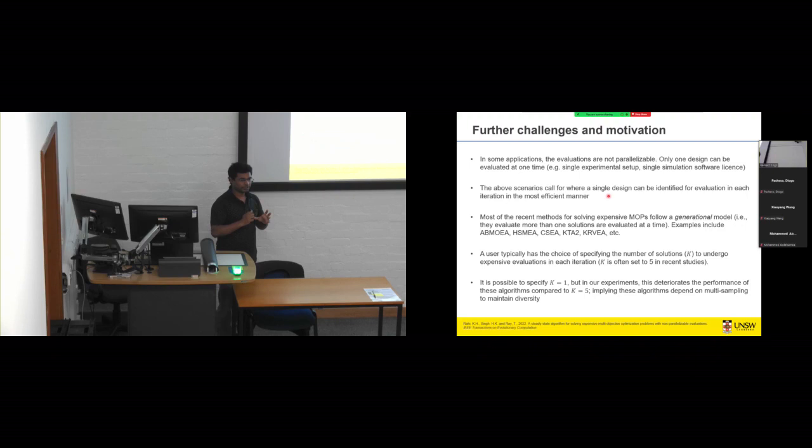Now the limitation currently is that most of the state of the art methods, published all within last two, three, maybe maximum five years, they all follow so-called generation model. Which means in every generation you evaluate more than one solution. Five is a commonly used number. And what we find out is if we set this parameter to just one, to evaluate one at a time, their performance actually goes down. Which is a bit counterintuitive. Because your model is being updated more frequently. But the performance is not improving. And the reason for that we figure is that this evaluation of multiple designs is almost a diversity preserving criteria in many of these algorithms.